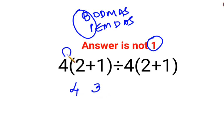Now, there is no sign between 4 and the bracket, means it is multiplication, divided by 4. There is no sign between this 4 and the bracket, means again multiplication. And we have 2 plus 1 which is 3. So 4 multiplied by 3 which is 12 divided by 12. So answer is 1.